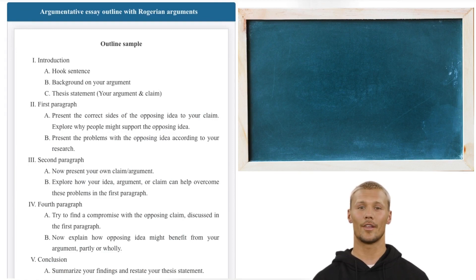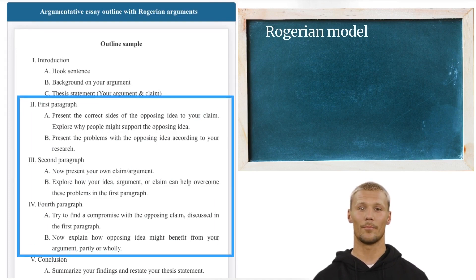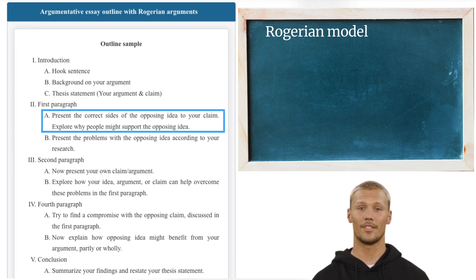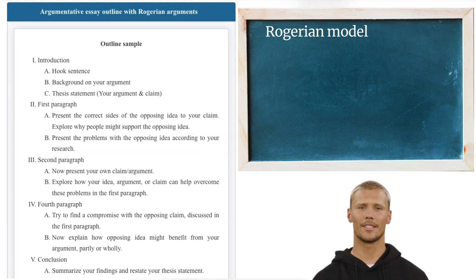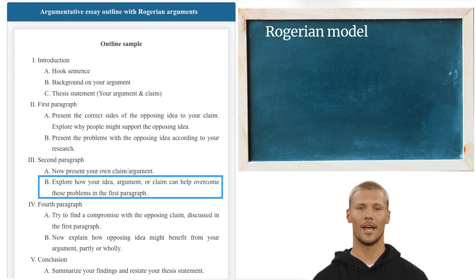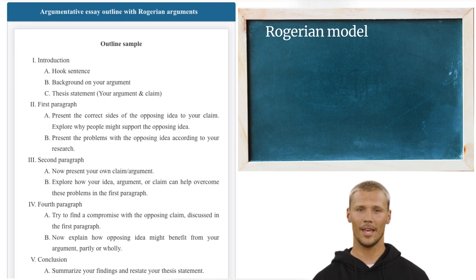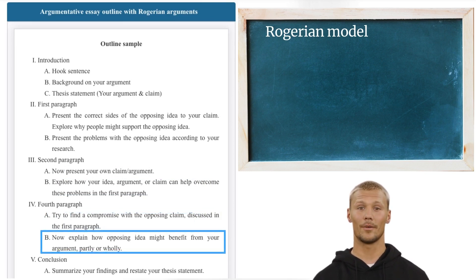As you see on your left, there's an argumentative essay outline based on the Rogerian Model. Right after the introduction, there are three body paragraphs that follow the model strictly. The first paragraph presents the correct sides of the opposing idea that is against your argument. Right after that, you present the problems with the opposing idea based on your research. In the second body paragraph, you present your claim and further explore how your claim can help overcome these problems from the first paragraph. And finally, in the last body paragraph, you try to find a compromise with the opposing claim and even explore how the opposing claim can benefit from your argument.